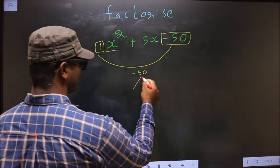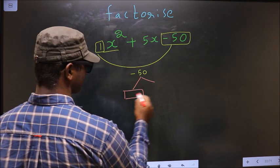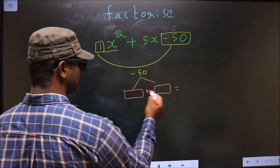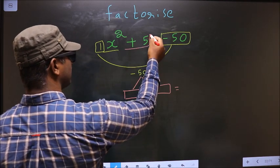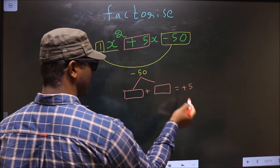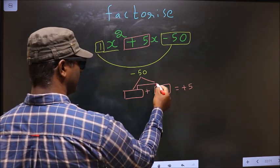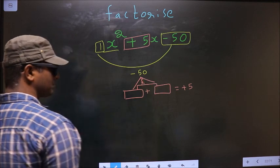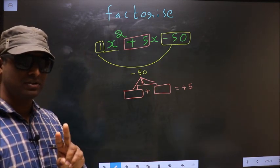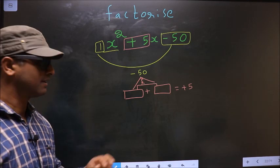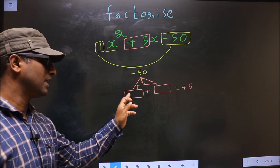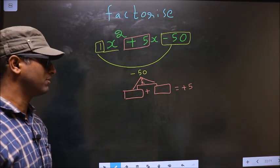Now you should look out for two numbers such that when you add these two numbers you should get the middle coefficient, that is +5, and also when you multiply you should get -50.